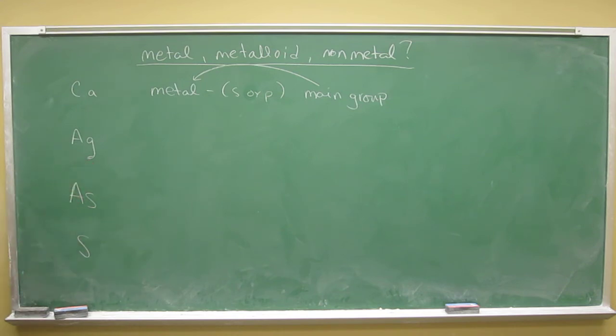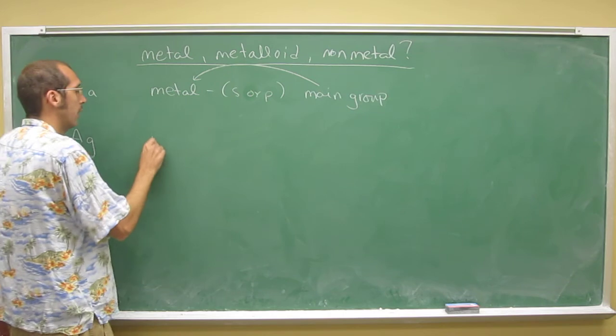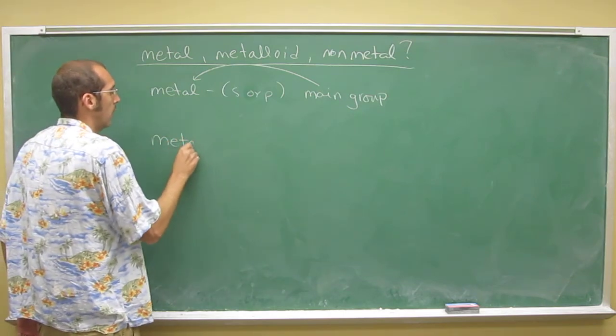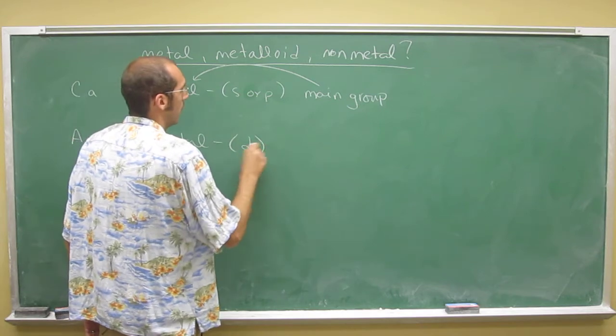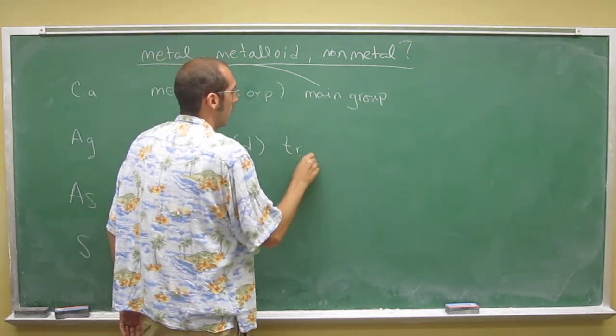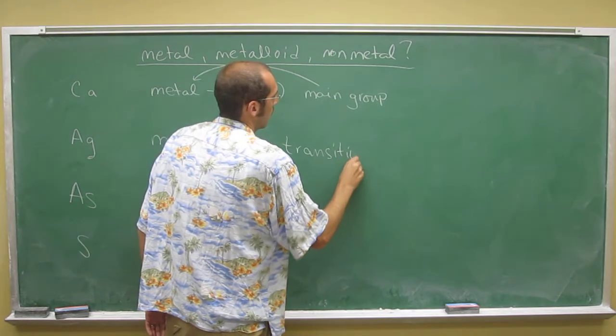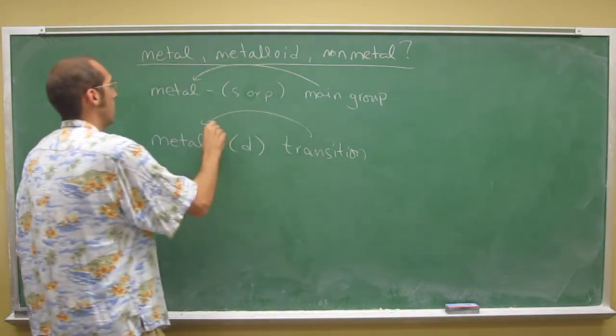Or as you can see, silver is in the D block, right? It's also a metal, but when it's in the D block metal, we call it a transition. So this is the transition metal.